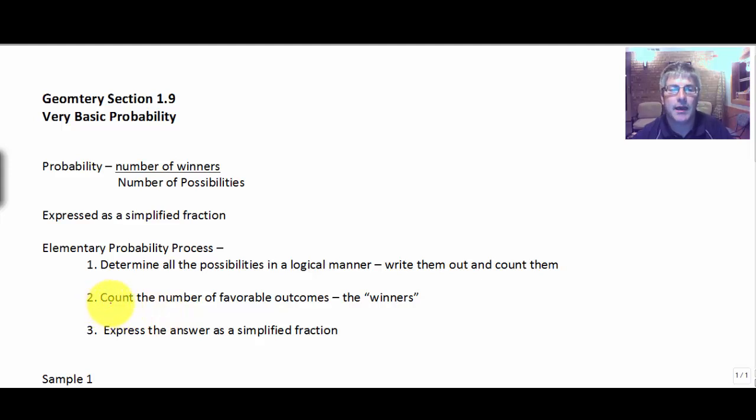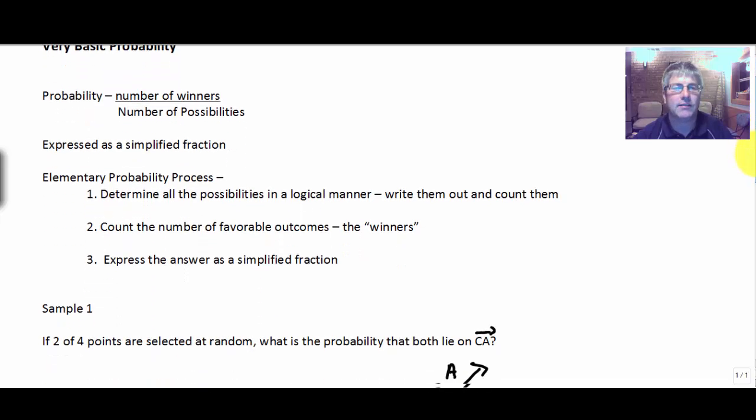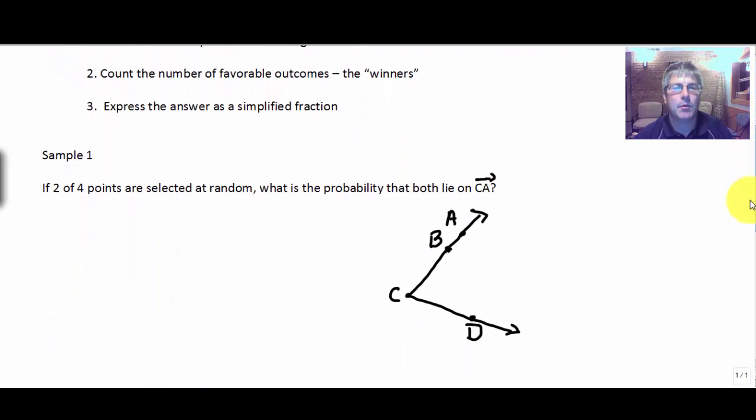And the second step, then, is once you have all your possibilities, determine the number of favorable outcomes. How many of those possibilities work? Those are your winners. That's the numerator of your fraction. So you have the number of winners divided by the number of possibilities. Simplify that fraction. And there you go. There you have the probability. So let's take a look at a couple sample problems.